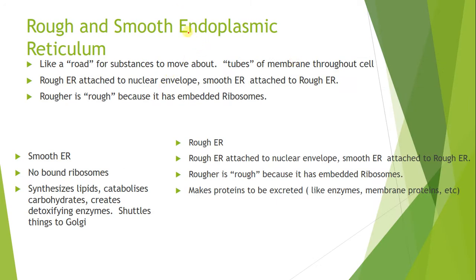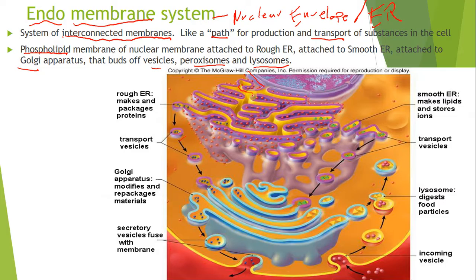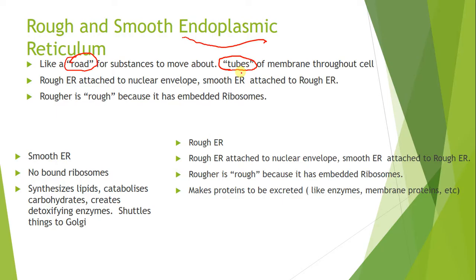The rough and smooth endoplasmic reticulum is the first and biggest part of the endomembrane system. It acts as a road for substances to move around in the cell, composed of tubes of membranes. The rough ER is called 'rough' because it has ribosomes embedded in it like little studs, and ribosomes make the proteins.